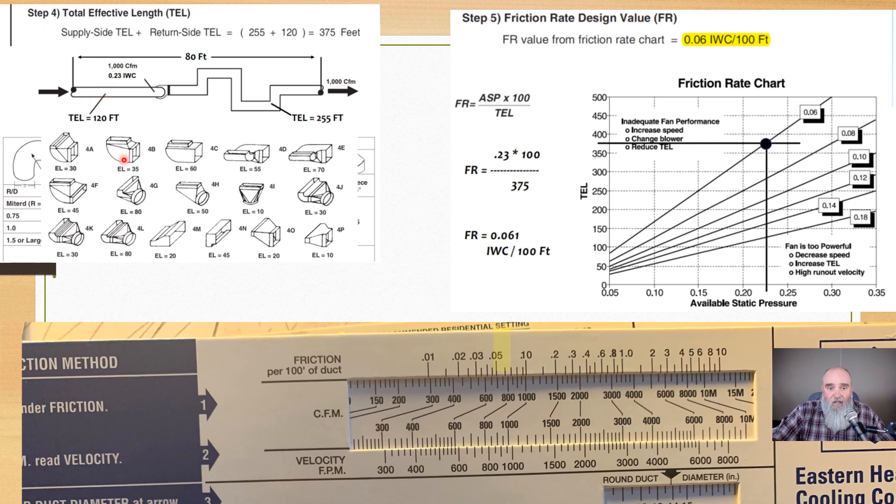And step four is going to be not just our floor boots or our termination boxes, whatever you want to call them. It's every component in the system effective as well as actual length, and then we solve for the critical path, the one duct that has the longest total effective length because that's what our friction rate is based off of. And then over here, you can see that once we have gotten all the values that we needed, we do a little bit of math because friction rate is equal to available static pressure times 100 divided by your total effective length, where you can use the Yakko wedge, as this is referred to often, and we can determine what our friction rate is by calculating it.